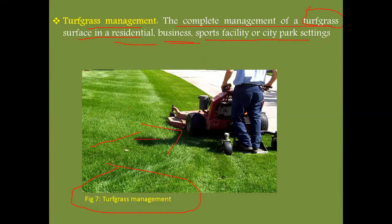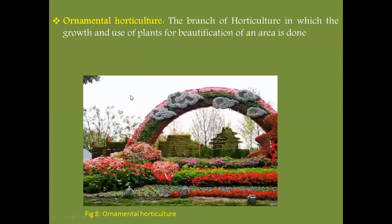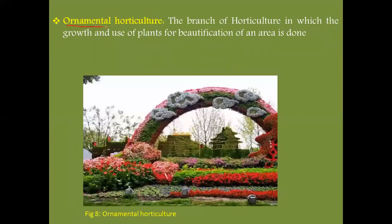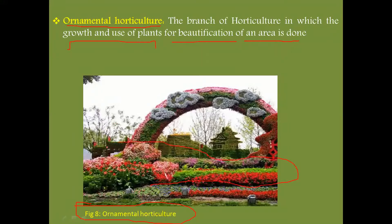Next is ornamental horticulture. It is a branch of horticulture in which the growth and use of plants for the purpose of beautification of an area is done. In figure eight, ornamental horticulture is shown, where beautiful ornamental plants and flowers are cultivated in a specific area.